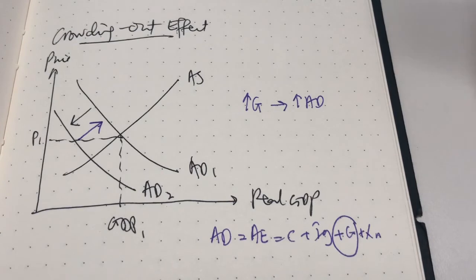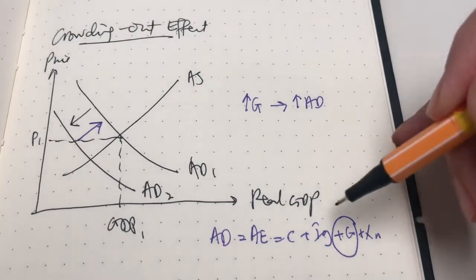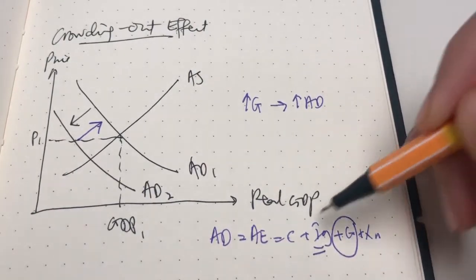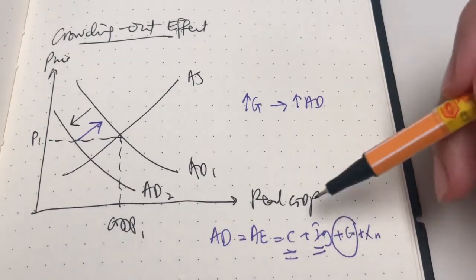We know that the interest rate is one of the determinants of investments as well as borrowings. When there is an increase in interest rates, IG and C will possibly be reduced because interest rate is a cost of borrowing.